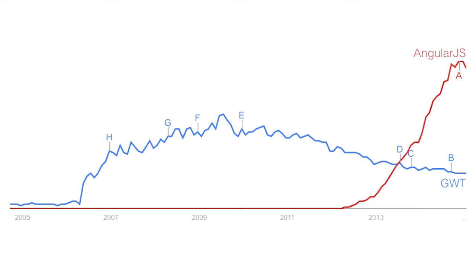It's pretty amazing, especially around point A on the graph where it suddenly started dropping for Angular. That was NISCO — at the European conference they announced Angular 2.0.